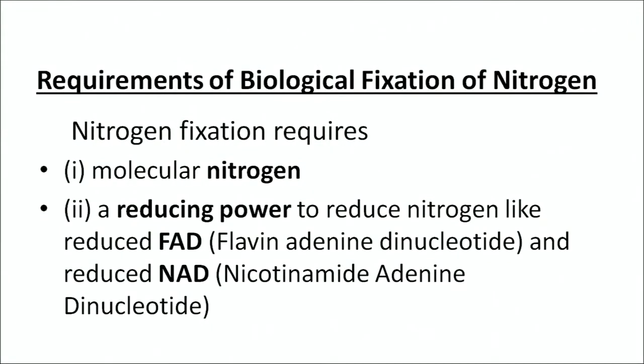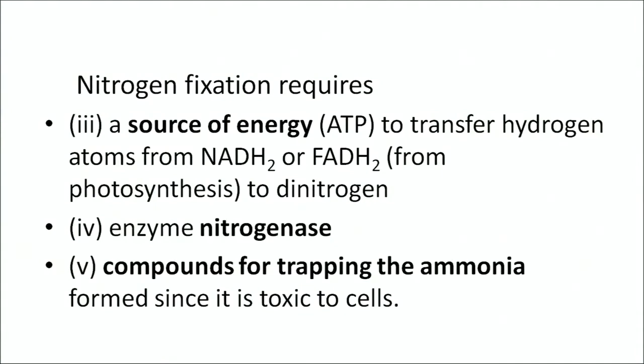The requirements for biological fixation of nitrogen are: first, molecular nitrogen; second, a reducing power such as reduced FAD (Flavin Adenine Dinucleotide) and reduced NAD (Nicotinamide Adenine Dinucleotide); third, a source of energy — chiefly ATP — needed to transfer hydrogen atoms from NADH2 or FADH2 to the dinitrogen molecule; fourth, the enzyme nitrogenase; and finally, certain compounds for trapping the ammonia formed, since ammonia is toxic and cannot be allowed to accumulate in the cells.